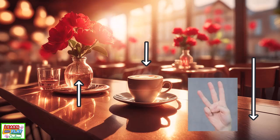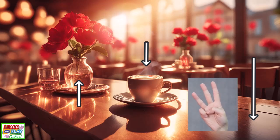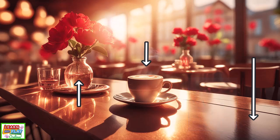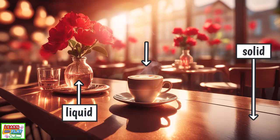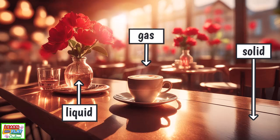There are three different forms or states of matter. The table is an example of a solid, the water is liquid, and the steam rising from the hot coffee is an example of a gas.